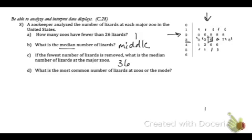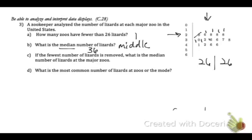So the median number is 36 lizards. Now, if the fewest number of lizards is removed, what is the median number of lizards at the major zoo? So the fewest number of lizards is 20. So if that is removed, we now have 14. So I count 7, 2, 3, 4, 5, 6, 7. And then I'm going to go right in the middle of those two numbers. But my two numbers are the same, 26 and 26. So what's in the middle of those? It's just that number. And sorry, not 26, 36. So the median did not change.